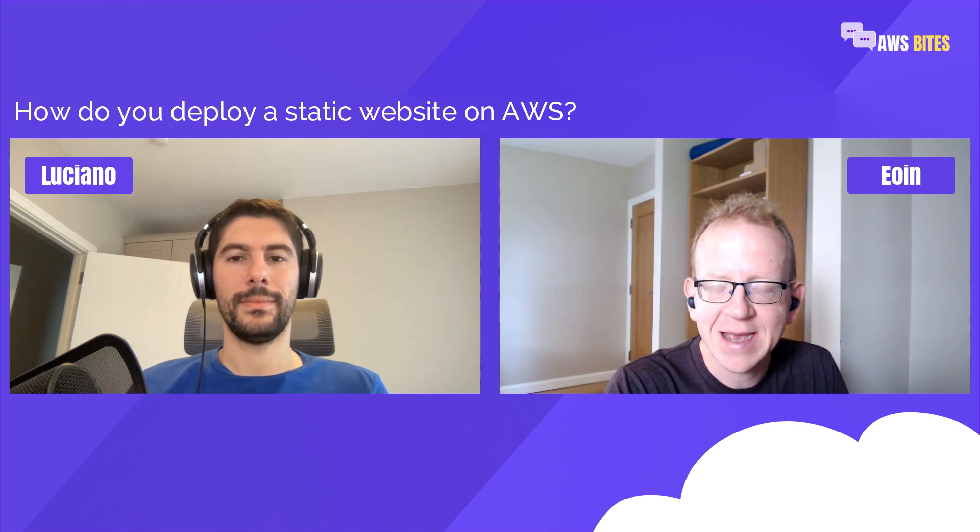Hello, and welcome to another episode of AWS Bytes, the weekly show where we answer questions about AWS in about five minutes. My name is Owen, and I am joined by Luciano. Today's question is: how do you deploy a static website on AWS?